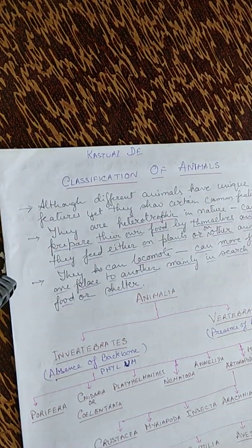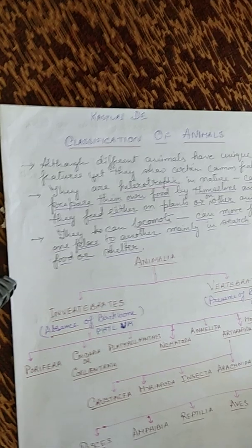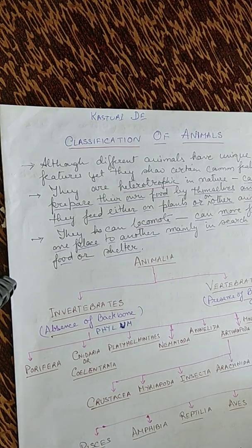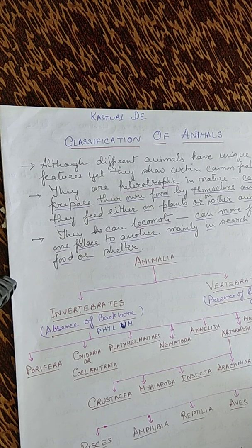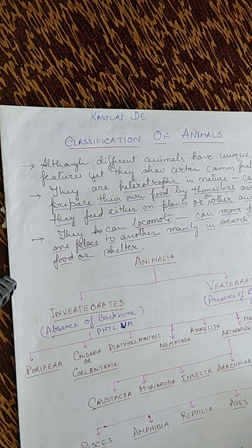Classification of animals: although different animals have unique features, they show certain common features. They are heterotrophic in nature — they cannot manufacture their own food and feed either on plants or on other animals. They can locomote, moving from one place to another mainly in search of food and shelter.